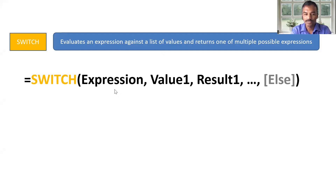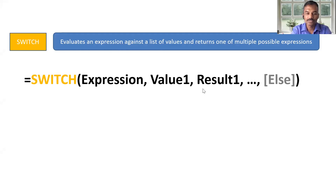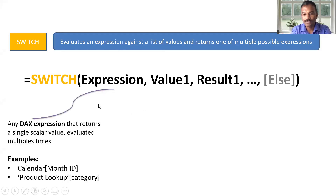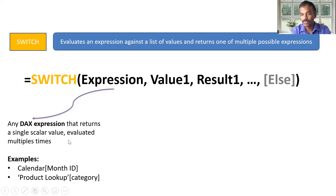What is the switch? What is the value? What is the result? What is the name? The switch is the expression that returns a single scalar value, evaluated multiple times.